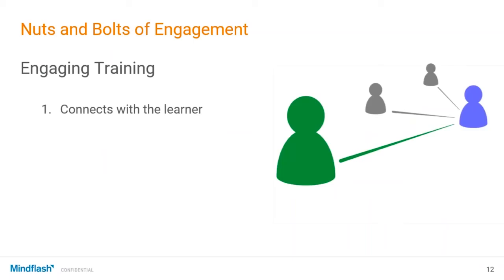I've broken this down into four segments. Number one: engaging training connects with the learner. You might have a whole different set of audiences depending on who you are — if you're training employees, maybe you have different audiences based on their particular group, whether they're in sales versus marketing, or a divide between levels of seniority.